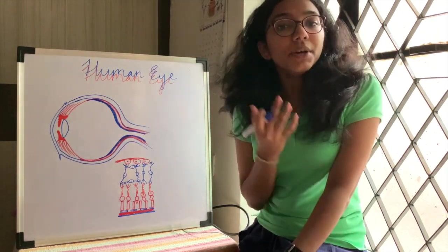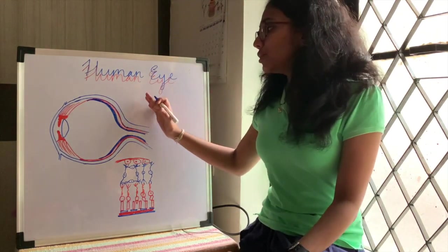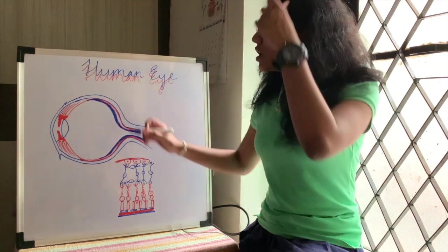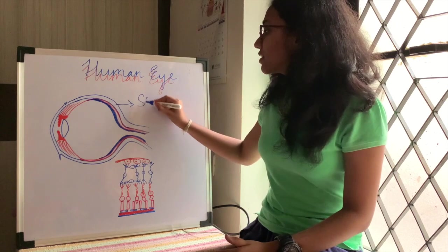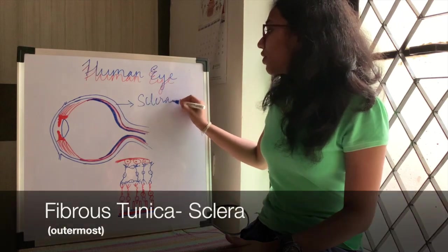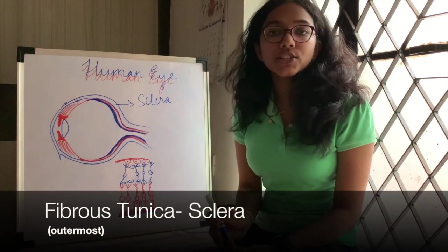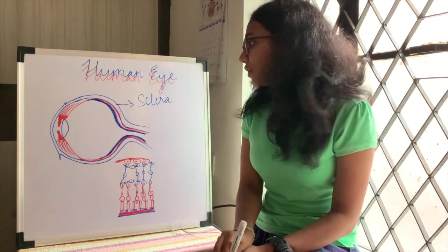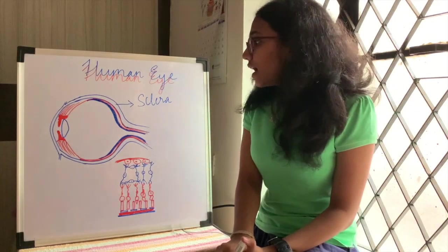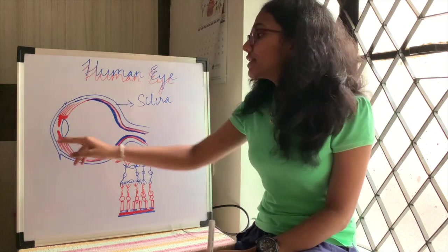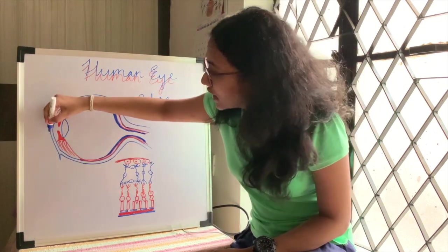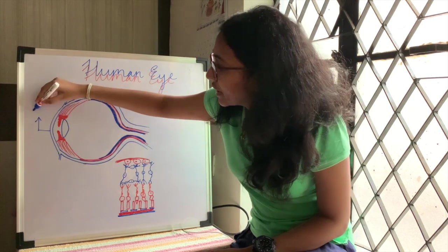Now let us talk about the major part: the eyeball. When we talk about the eyeball, let's come from the outermost layer. The outermost layer here is known as sclera, also known as fibrous tunica. The sclera's anterior end—anterior means in the front—is known as cornea.